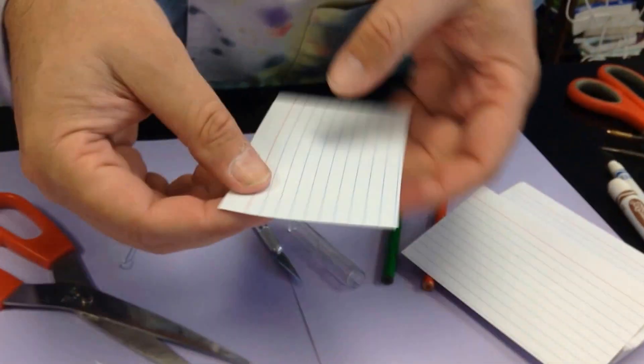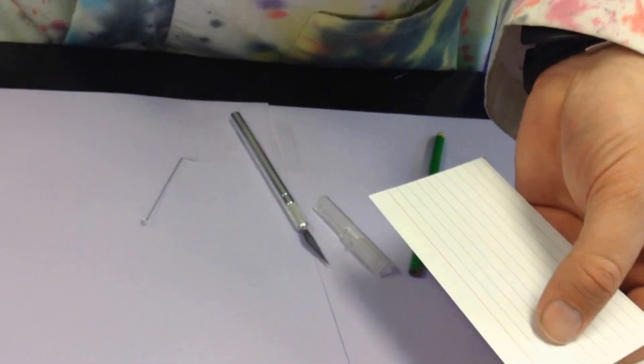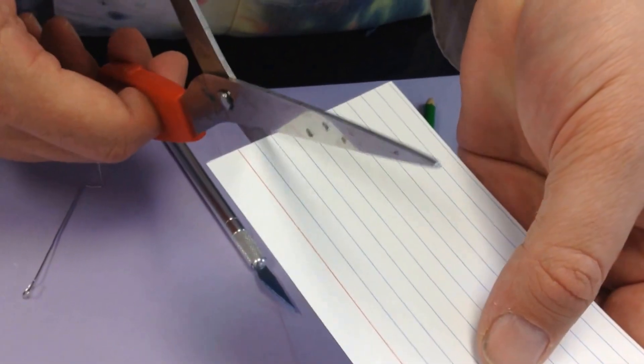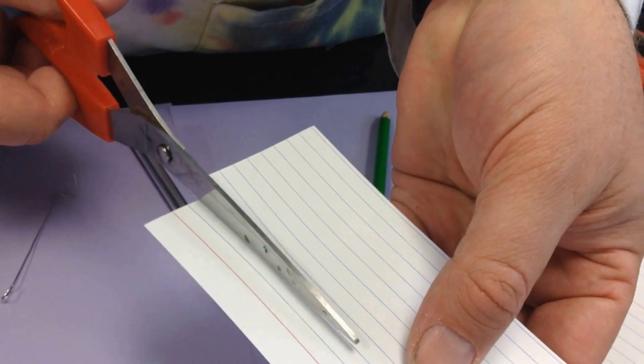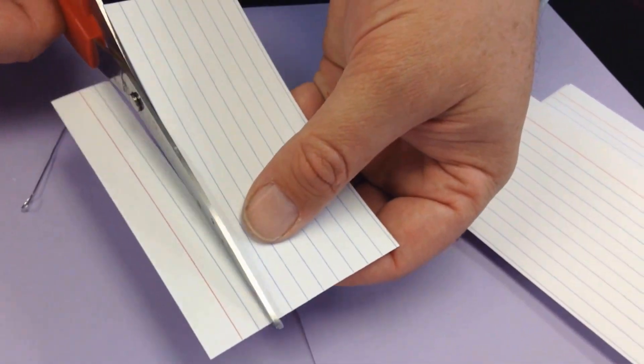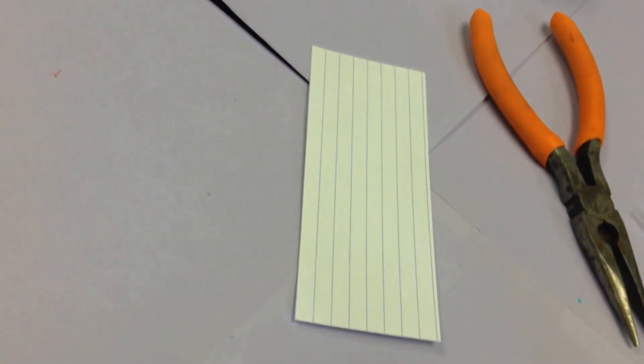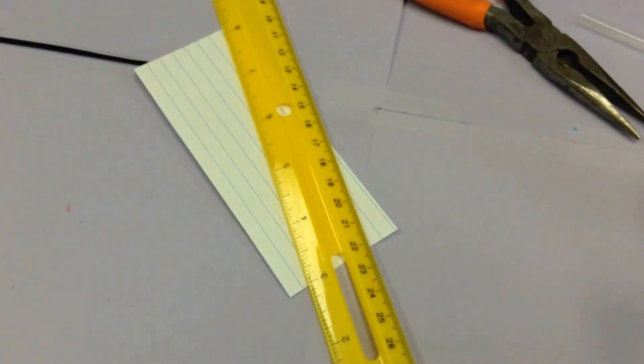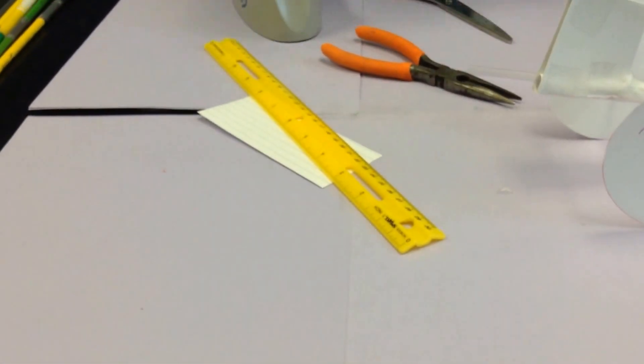Grab a small note card. What you want to do is find the red line and count down two blue lines and cut along that second blue line. That'll give you just about the perfect size for the propeller. Anything larger than that will not be allowed. And now you have a rectangle.